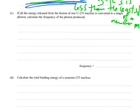Cool. Okay, part C. If all the energy released from the fission of one uranium-235 nucleus is converted to a single photon, calculate the frequency of the photon produced. So the way forward with this one is to work backwards. If we start from E equals HF, that's what we're going to have to use to find the frequency. So we're trying to find the frequency. H is a constant, so we've got that. How do we find E?